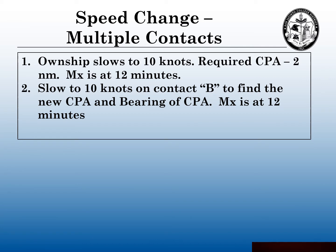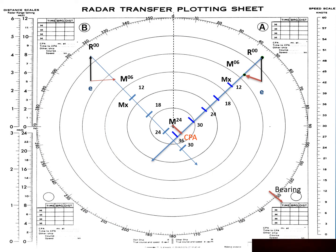Once you do a course change or a speed change on one contact, you have to do it on all the contacts on your plotting sheet. This time we're going to do a speed change on the multiple contacts. Maybe we cannot change course because the traffic, or maybe shoal areas off to our starboard side, do not allow us to alter course to starboard. So our own ship is going to slow to 10 knots. We still have our required CPA of two nautical miles, and the execution point is still going to be 12 minutes.